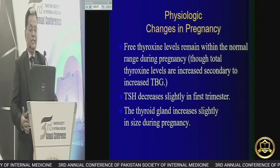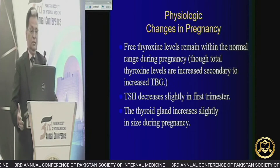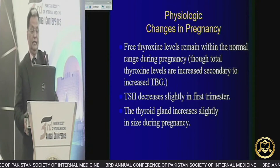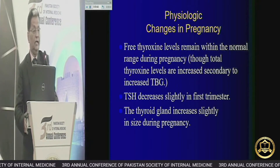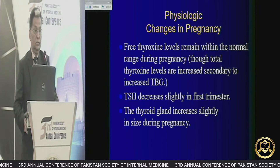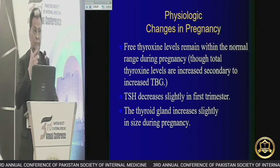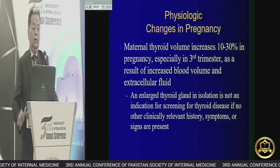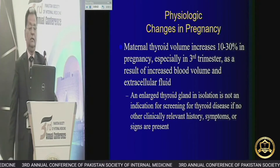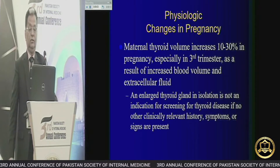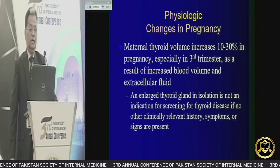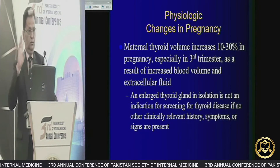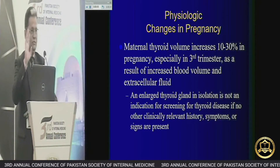TSH decreases slightly in the first trimester, and the thyroid gland increases slightly in size during pregnancy. Maternal thyroid volume may increase up to 10 to 30 percent in pregnancy, especially in the third trimester. We have to look at what things to monitor in each trimester — first, second, and third.